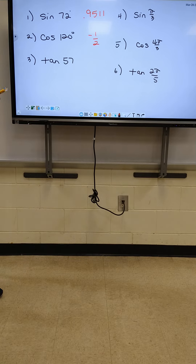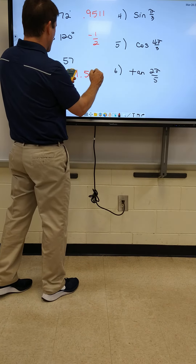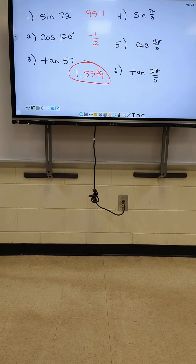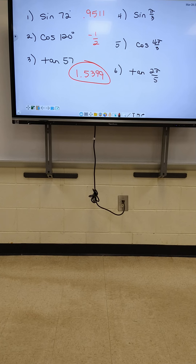Tangent of 57 — I got 1.5399. Somebody check that. Are we good? Everybody's good on one, two, and three, right? Somebody didn't clear their calculator and put it back in degree mode — I bet it's in radian mode. See, it says RAD. You've got to make sure it's in degree mode. Now it will give you the right answer.